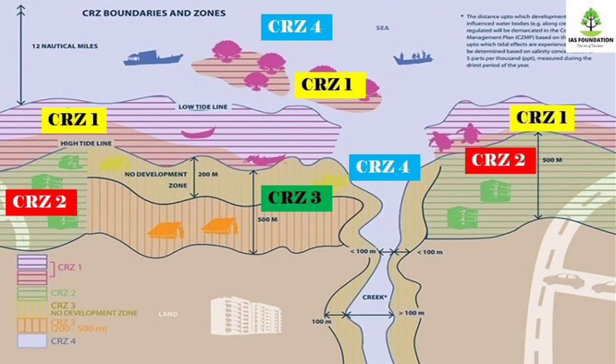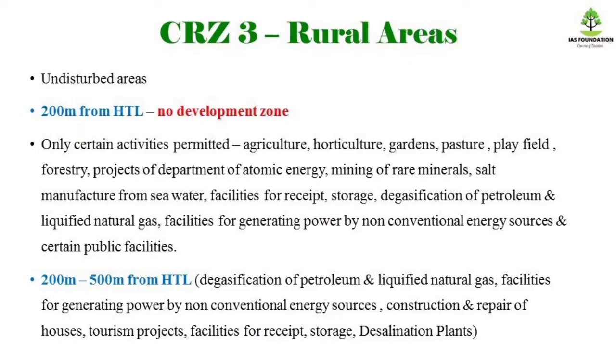There are CRZ3 areas — these are rural areas, outside district limits. You can see the area beyond the High Tide Line. If you have a no development zone, you can do any development activity only under specific conditions.